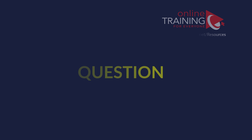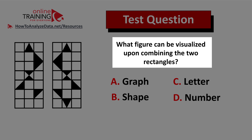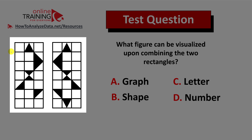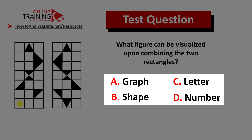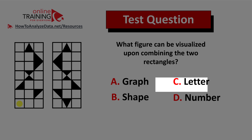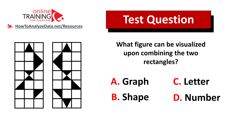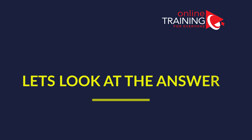Let me share a tricky question from the test. Here's the question: what figure can be visualized upon combining the two rectangles? You have two rectangles on the left, both seven by three, and four different choices: choice A graph, choice B shape, choice C letter, and choice D number. See if you can pause this video for 10 to 15 seconds to figure out the answer.